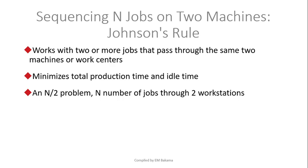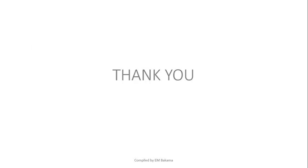So we have three methods: the assignment method, priority rules, and the Johnson rule. We're not going to do calculations in this video — this is just the introductory part of scheduling. The chapter on scheduling is very broad, but here we've scaled it down to your scope. I really hope that this video was helpful. See you soon for the next video on calculations — how to do the assignment model, the priority rule, and the Johnson rule. Thank you so much for your time. Don't forget to like the page and follow us.